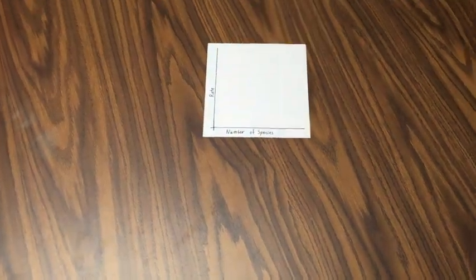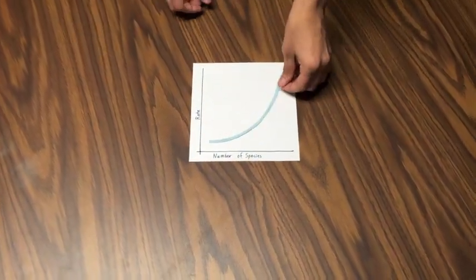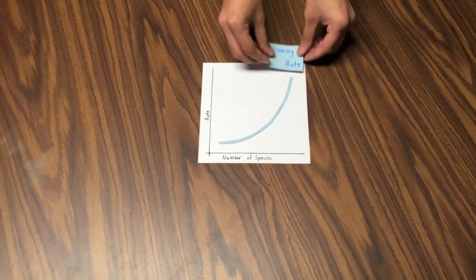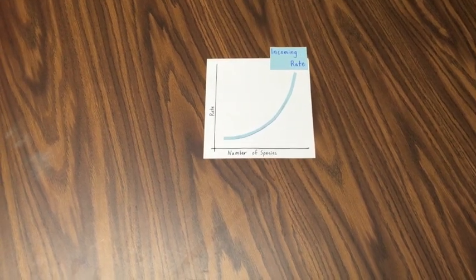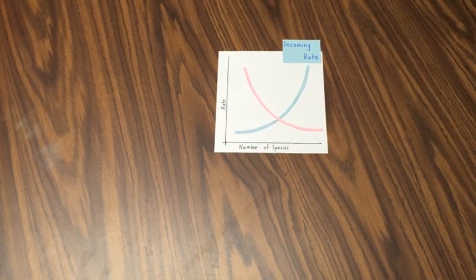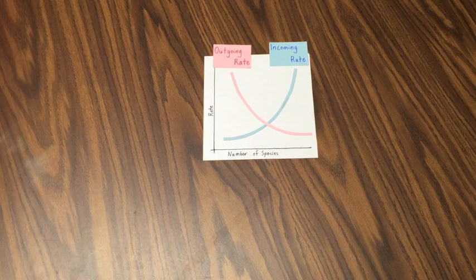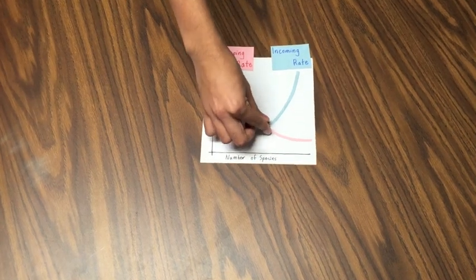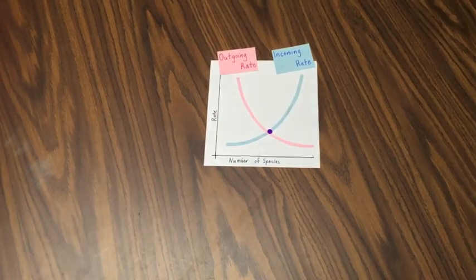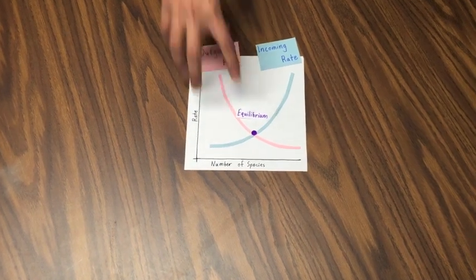There are several factors that influence species richness. The first is immigration, which is represented by the number of species that migrate to an island. The second is extinction — these species don't necessarily die out, but may be forced off the island due to competition. These rates can be modeled on a graph, and the intersection of incoming and leaving species is called the equilibrium, which indicates the species richness of the island.